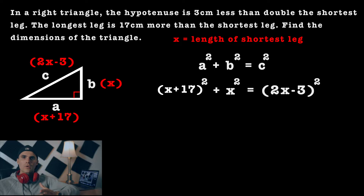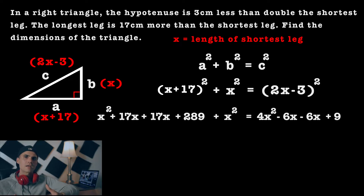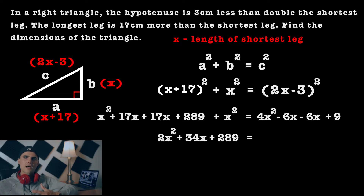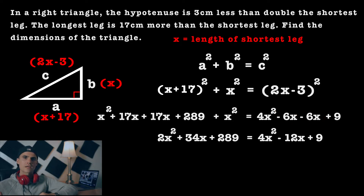Now we have an equation to solve for x. We expand everything and bring it to one side. Expanding x plus 17 squared gives x squared plus 17x plus 17x plus 289, and we still have the plus x squared. On the right side, 2x minus 3 squared expands to 4x squared minus 6x minus 6x plus 9. Simplifying like terms: the left side becomes 2x squared plus 34x plus 289, and the right side becomes 4x squared minus 12x plus 9.